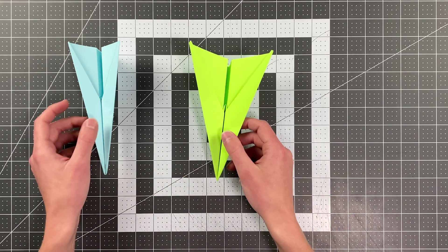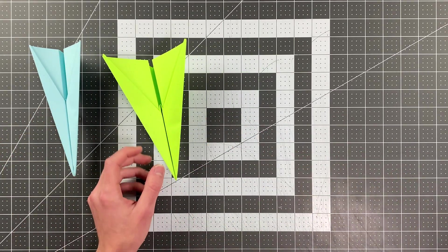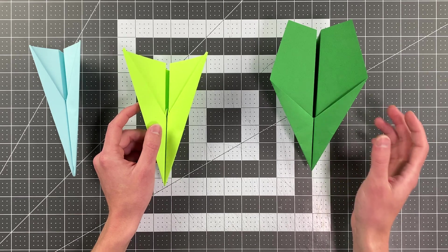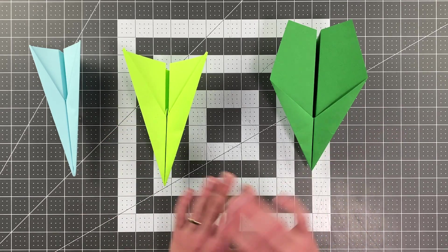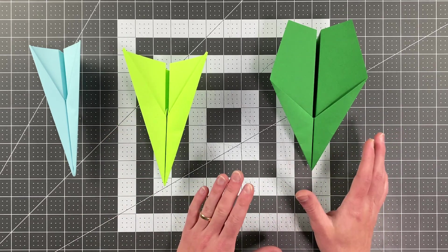So the next logical step in that progression is to teach you now how to fold the glider version of Rival, which is an excellent, excellent glider, not very hard to fold.